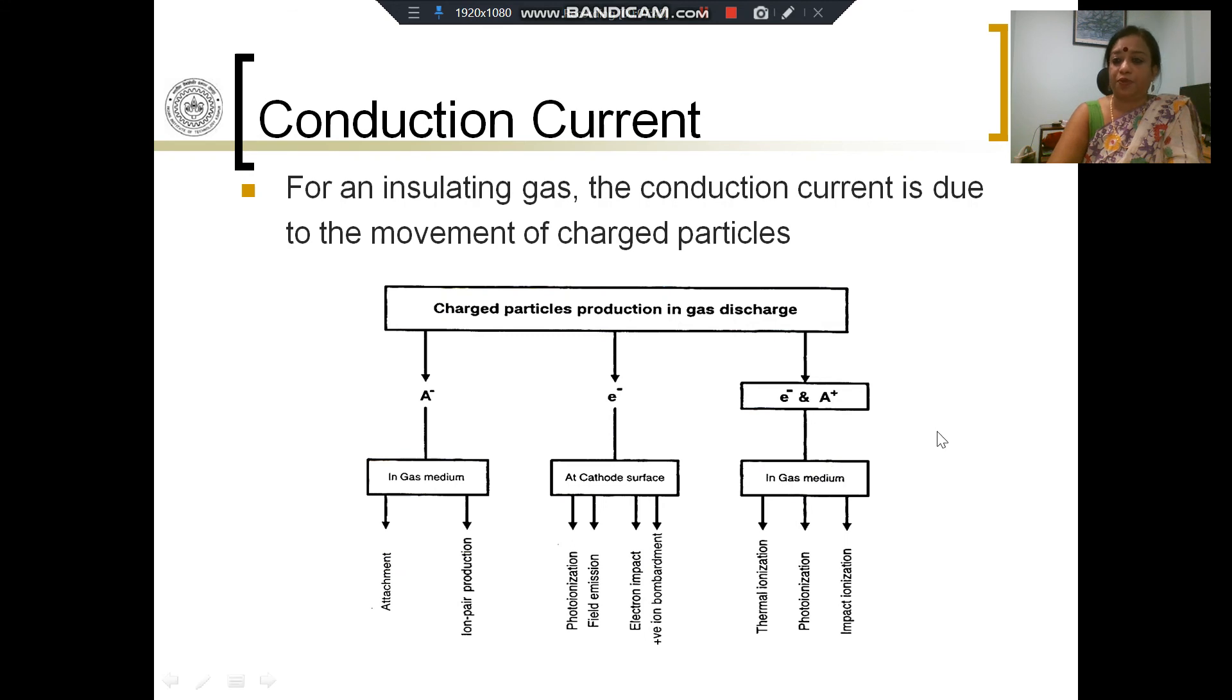Electrons may also be produced due to ionization of neutral particles, in which case for every electron produced, a positive ion will also be produced. This electron and positive ion production takes place within the medium of the gas, and the processes involved are thermal ionization, photoionization, and impact ionization.